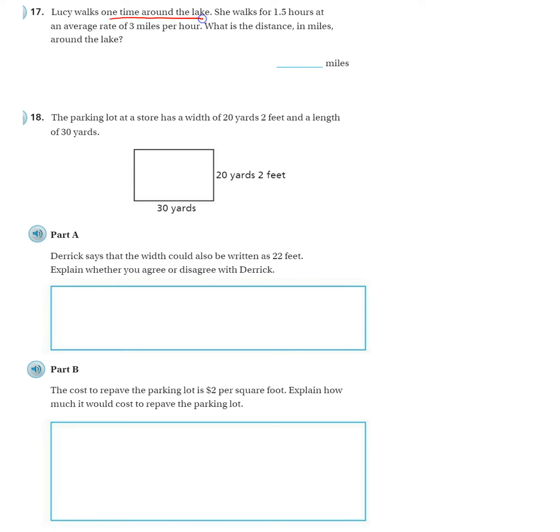Lucy walks one time around the lake. She walks for 1.5 hours at an average rate of 3 miles per hour. What is the distance in miles around the lake? We're using our distance, rate, and time formulas. We want to find the distance. It says, what is the distance?